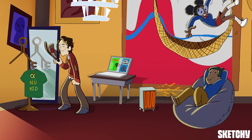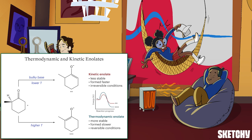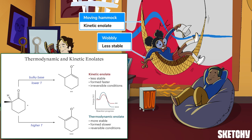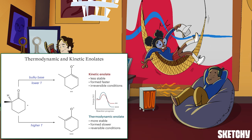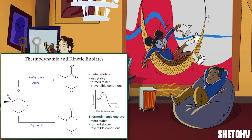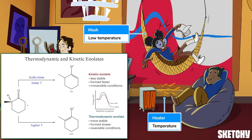These study buds are here to remind you of kinetic and thermodynamic enolates. The fast-moving hammock swinger symbolizes a kinetic enolate — an enolate that's formed rapidly, particularly if a bulky base is used in the reaction. She's so wobbly because kinetic enolates are less stable than thermodynamic enolates. Thermodynamic enolates are represented by this fella who's stable on the ground as he relaxes by the thermal heater. Kinetic enolates are most often formed when deprotonation is performed at low temperature, while thermodynamic enolates are formed at higher temperatures.